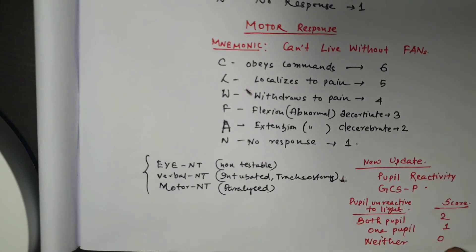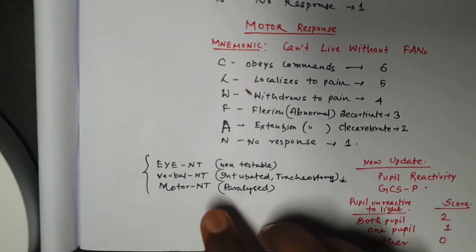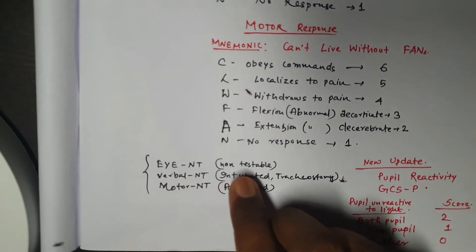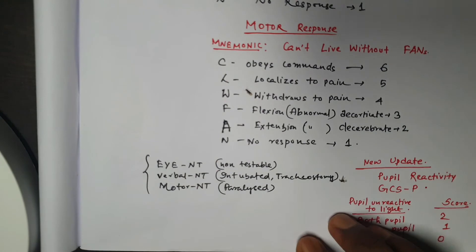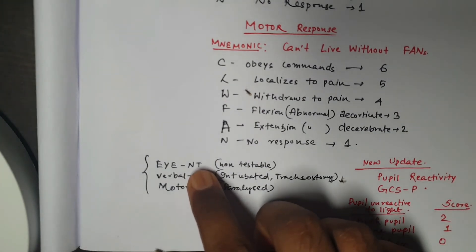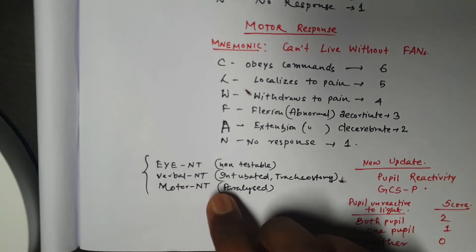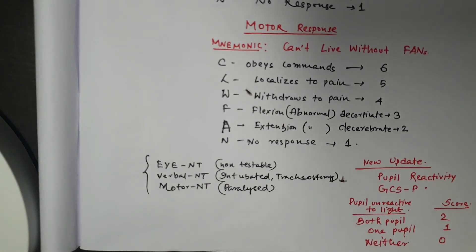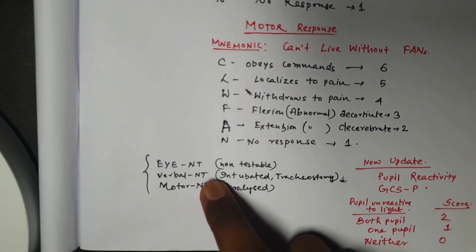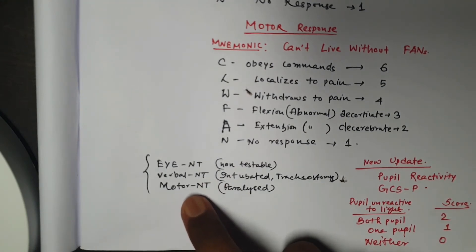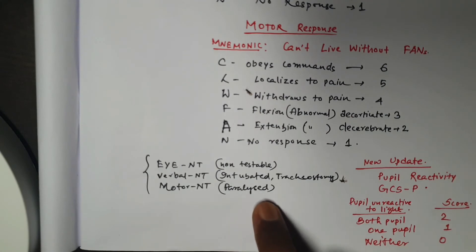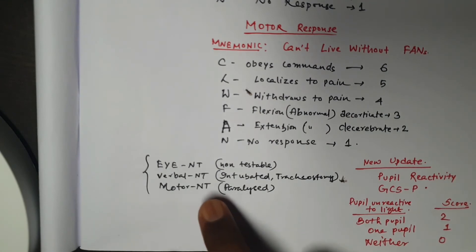There are some special conditions to note. If the eye is not testable, write NT. If verbal response is non-testable — for example, in intubated or tracheostomy patients — it is written as non-testable. Similarly, if the patient is paralyzed, the motor response is written as non-testable.